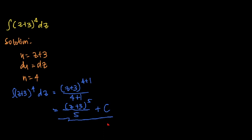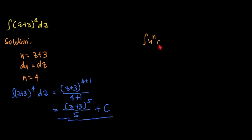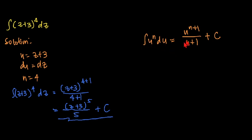As a recap, the power formula states that the integral of u^n du = u^(n+1)/(n+1) + C. The given integral must satisfy this formula — du must be the derivative of u, n is the exponent, and u is the given function. If the integral satisfies these requirements, we can apply this formula. Thank you for watching and enjoy learning.